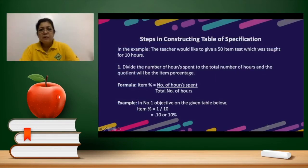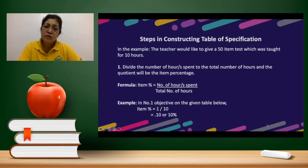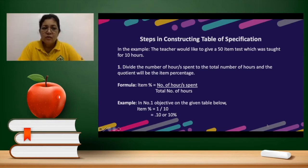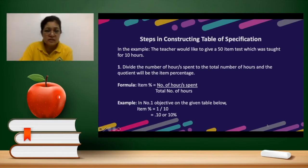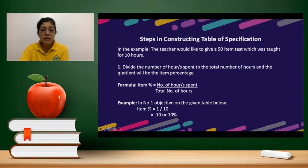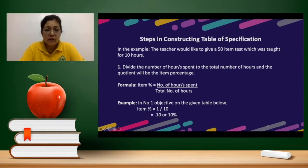In the example, let's say the teacher would like to give a 50-item test covering content taught for 10 hours. We have to divide the number of hours spent by the total number of hours, and the quotient will be the item percentage. The formula is: item percentage equals the number of hours spent divided by the total number of hours.